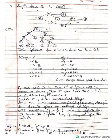DFS follows the LIFO data structure — last in first out. But breadth first search follows the queue data structure — first in first out.